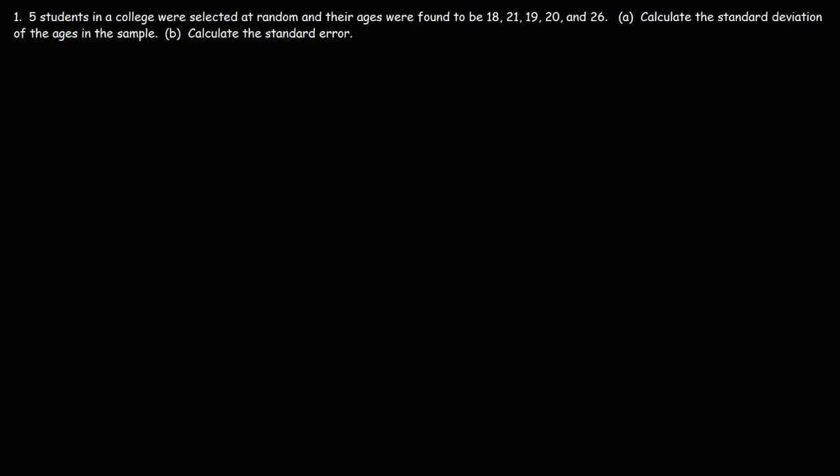Let's start with this one. Number one, five students in a college were selected at random and their ages were found to be 18, 21, 19, 20, and 26. Part A. Calculate the standard deviation of the ages in the sample.